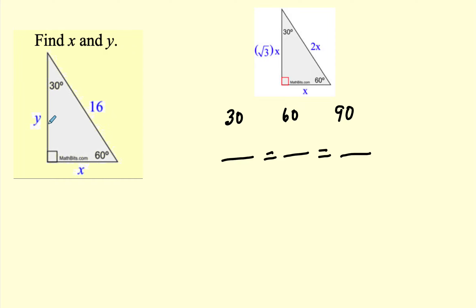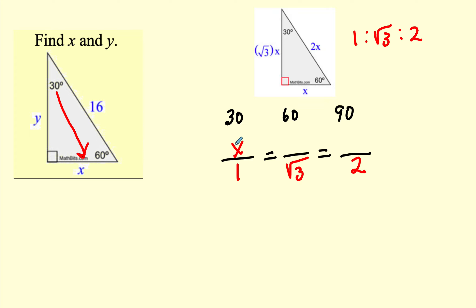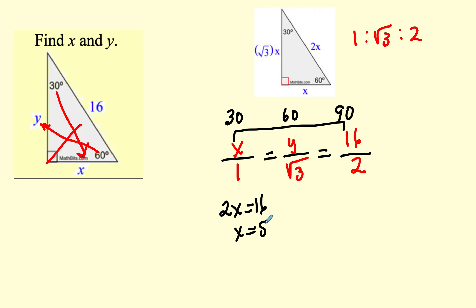Let's go ahead and solve this 30-60-90 triangle. I'm going to set up an extended proportion. In the bottom, I'm going to write the ratio 1, √3, 2, because that is the ratio of a 30-60-90 triangle. Opposite the 30-degree angle is x, opposite the 60-degree angle is y, and opposite the right angle is 16. I'm going to cross multiply these two: 2x = 16, therefore x = 8. Now I'm going to cross multiply for y: 2y = 16√3. I'm going to divide both sides by 2, and that will be y = 8√3.